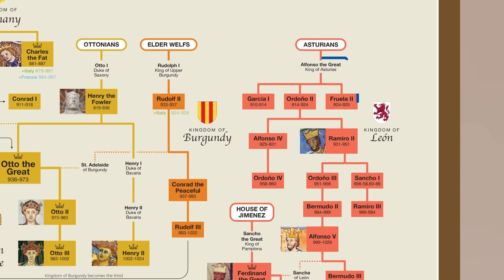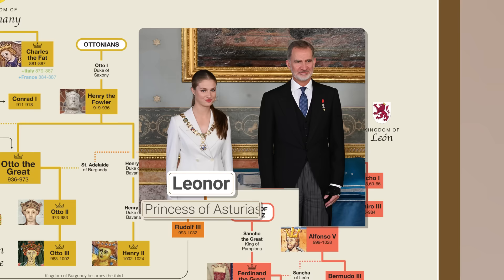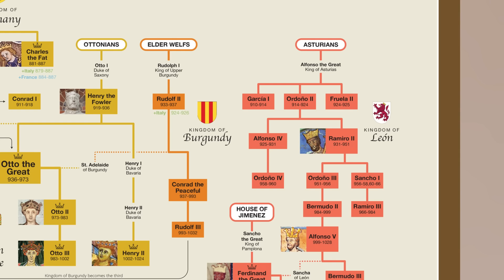Alfonso's son, Fruella II, moved the capital to the city of Leon. Hence, around this time, the kingdom is known as the Kingdom of Leon. The name of the Kingdom of Asturias still lives on as the title Prince or Princess of Asturias, which is held by the heir apparent to the Spanish throne, kind of like the Prince of Wales in the UK. Over the next two centuries, the borders of the Kingdom of Leon and other kingdoms on the Iberian peninsula kept shifting. New kingdoms were born as well, such as the Kingdom of Galicia and the Kingdom of Pamplona, later known as the Kingdom of Navarre.